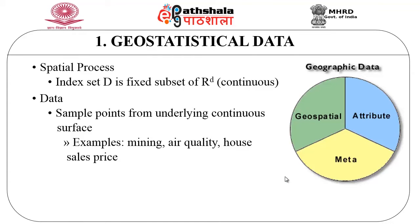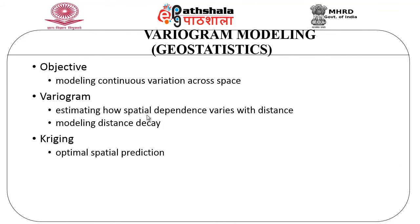If we look at geostatistical data, this geospatial data has attributes and metadata associated with it. This is a spatial process where the indexed set is a fixed subset of R^d, which is a continuous dataset. The sample points are found from an underlying continuous surface — for example, mining, air quality, or house sales prices. These are modeled using various modeling techniques, one of which is the variogram modeling technique. The objective is to model the continuous variation across space. The variogram estimates how spatial dependence varies with distance and models the distance decay.